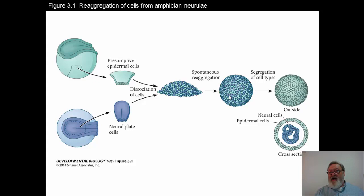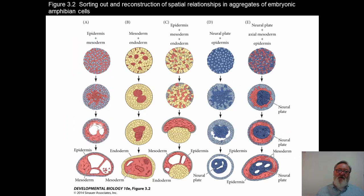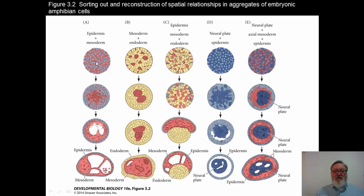Although the cells were initially randomly arranged, as progression of differentiation took place in this small embryoid — it didn't really form an embryo — Holtfreiter found he could mix various combinations of embryonic amphibian cells and get various kinds of segregations based on what they would do in the embryo's body. When he mixed epidermis and mesoderm, the blue epidermal material and the red mesodermal material, the cells were initially randomly arranged, then the mesoderm organized in the center forming mesodermal-type structures, and the epidermis formed on the outside — exactly what you would expect in a developing embryo.